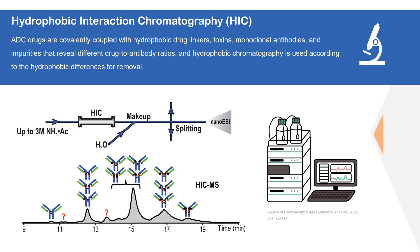For example, cysteine-coupled ADCs usually afford five different products with DAR of 0, 2, 4, 6, and 8. The cysteine-coupled ADC purification can be separated using hydrophobic interaction chromatography combined with a linear gradient. Usually, ammonium sulfate can be added to the chromatography buffer to assist in the capture of target products within hydrophobic chromatography, but it often leads to low yield. In this case, sodium chloride with lower hydrophobicity can be used to overcome the above problems.